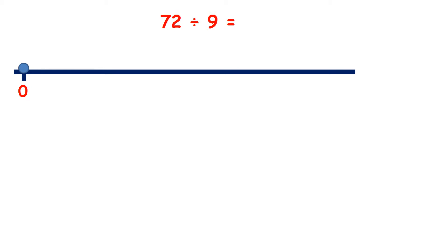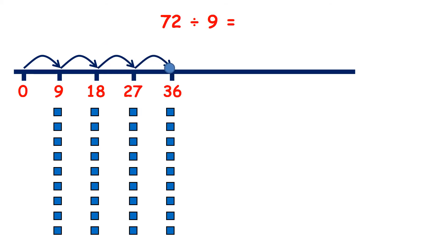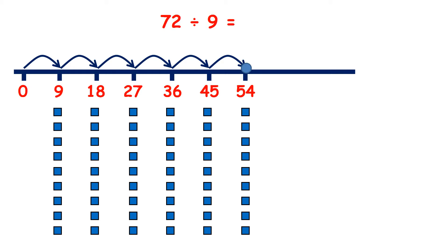Now we have 72 divided by 9, so let's count up in 9s. 9, 18, 27, 36, 45, 54, 63, 72. So we've made 1, 2, 3, 4, 5, 6, 7, 8 jumps. We've got 8 groups of 9, so our answer is 8.